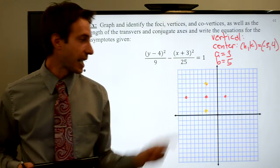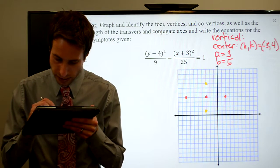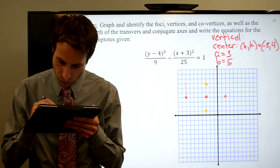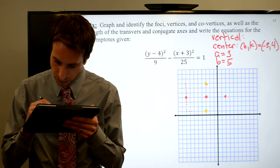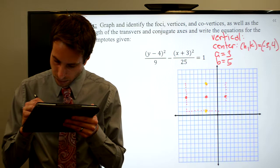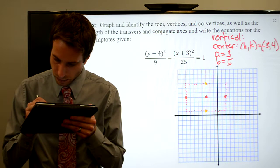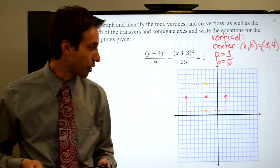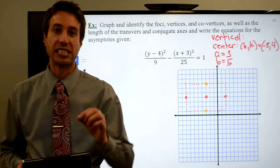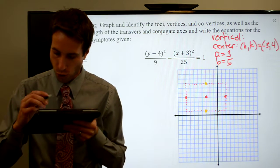Awesome. Now, my box, my rectangle, goes through the vertices and the co-vertices. I should have a rectangle that looks like that. I know that my asymptotes need to go through the diagonal, through the box, and it's got to go through the corners.